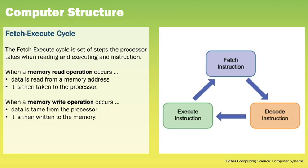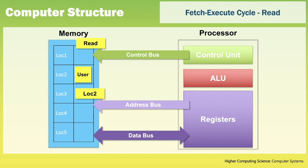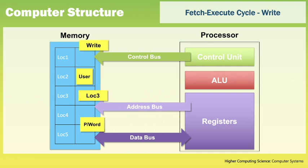The fetch-execute cycle is a set of steps that the processor takes when reading and executing instructions. There are two main operations: a memory read and a memory write. In a memory read, the memory address register sets up the address bus with the relevant memory location; the control bus read line is activated; the contents at that address are placed onto the data bus, which then transfers the data to the memory data register. In a memory write, the memory address register sets up the address bus; the memory data register passes the data to the data bus; the control bus write line is activated; and the data bus transfers the data to the memory location specified.